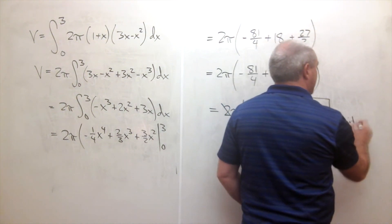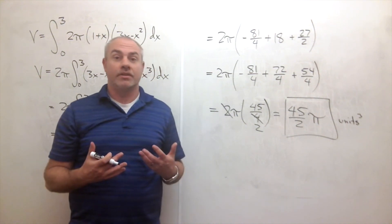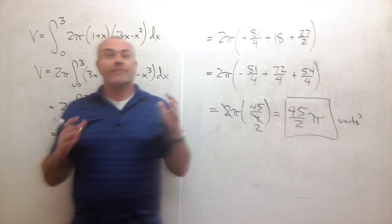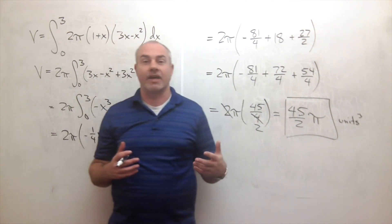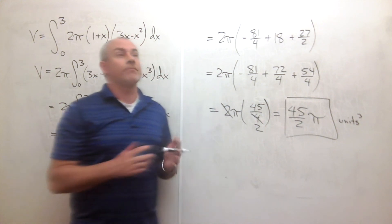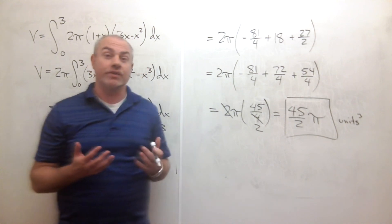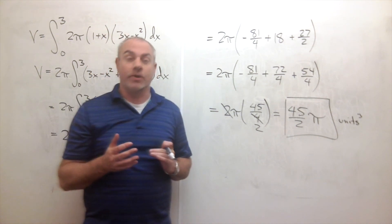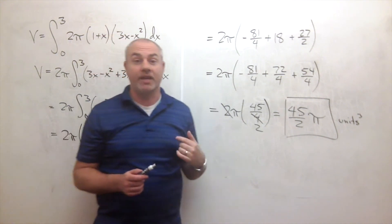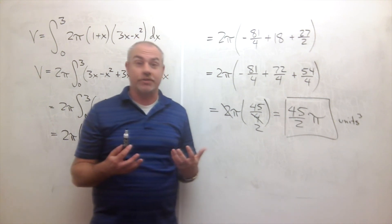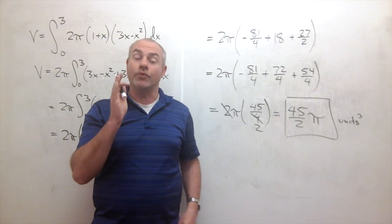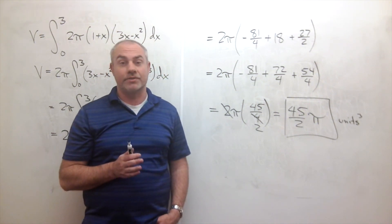That's how we use the method of cylindrical shells to find volume. One important question: when should you use the washer or disk method versus cylindrical shells? Often both work equally well, but sometimes one is better. The key question to ask yourself is: how do I want to slice this solid — so that the x-axis gets cut, or so that the y-axis gets cut? Answer that, and you'll know which method to use. Now let's do some examples.